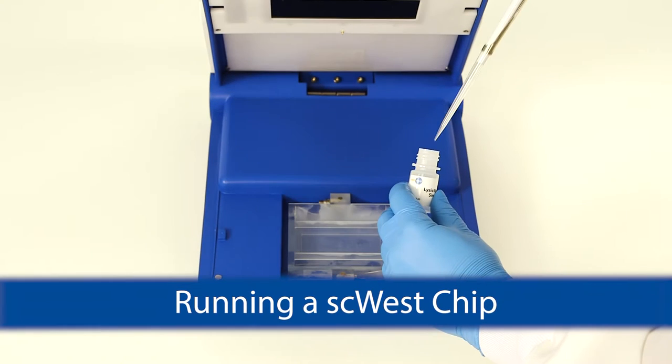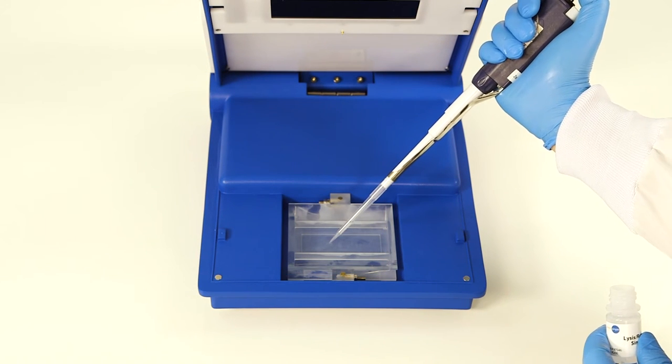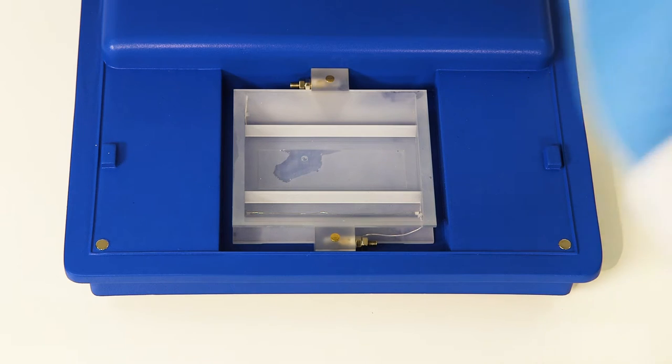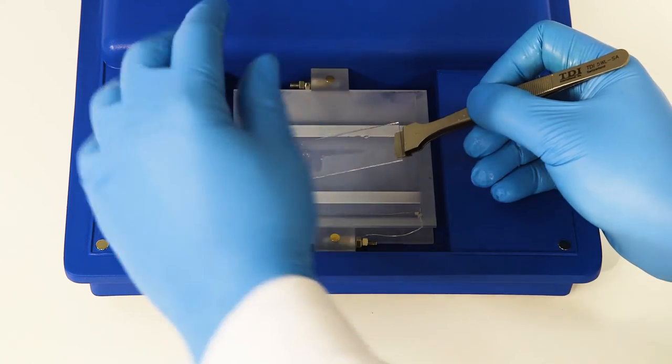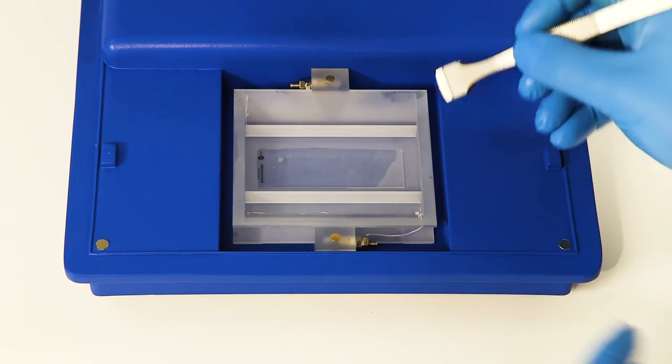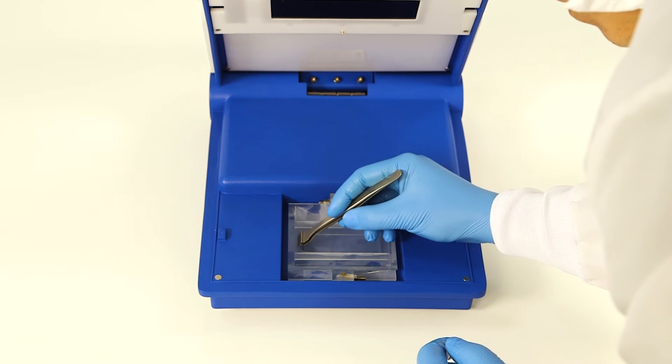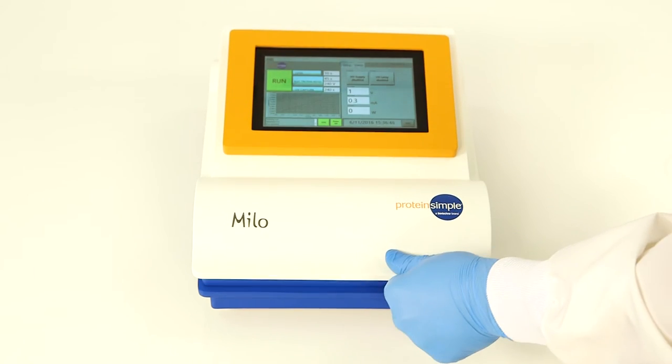To run an SC-West chip, add 300 microliters of lysis buffer to one end of the chip reservoir in the electrophoresis cell. Then carefully lower the chip, gel side up, into the reservoir so that the lysis buffer wicks across the bottom with minimal air bubbles. It is important to make sure that lysis buffer does not get onto the gel surface to avoid premature lysis of your cells.